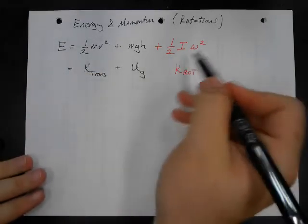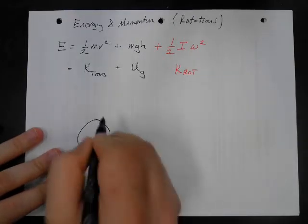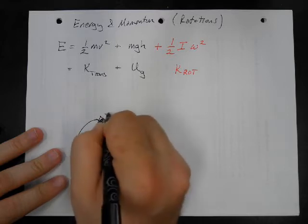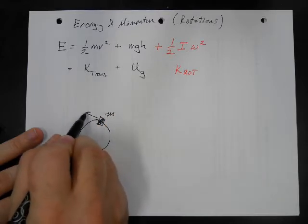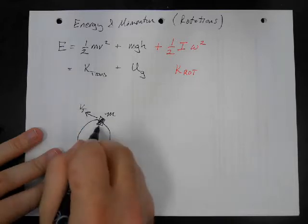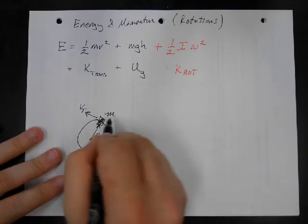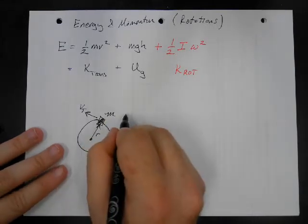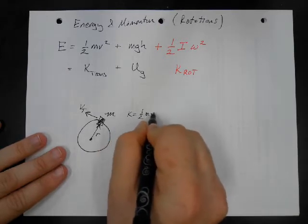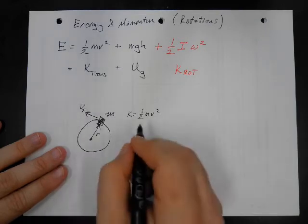So where this is coming from, if we have something moving in a circle, here's our object with mass M. And we'll give it some tangential speed, and we'll put it at some radius R here. So this thing, this little chunk, has energy one-half M V squared. And we're going to put that in terms of these rotational variables.